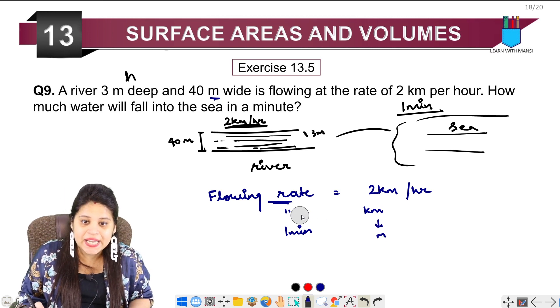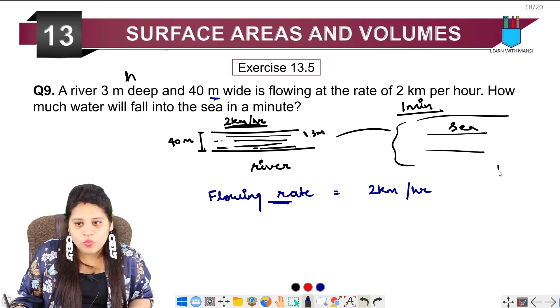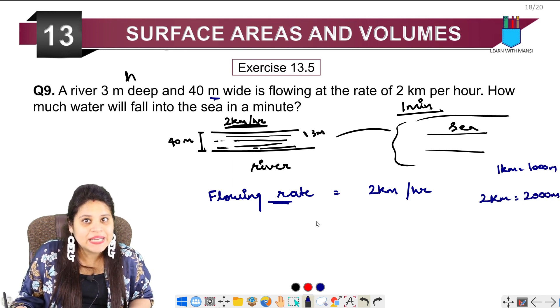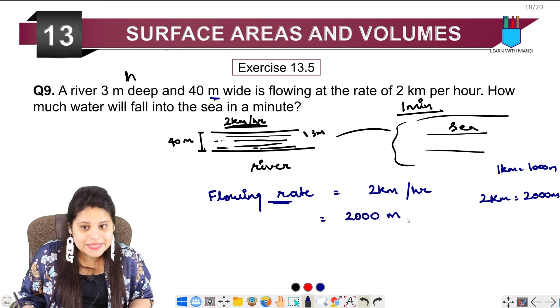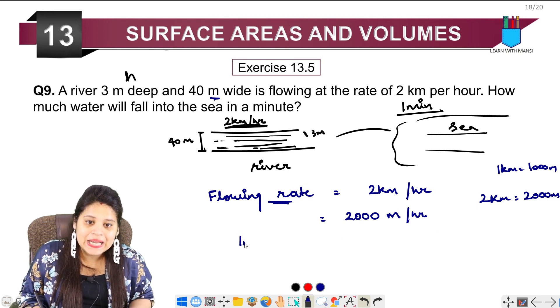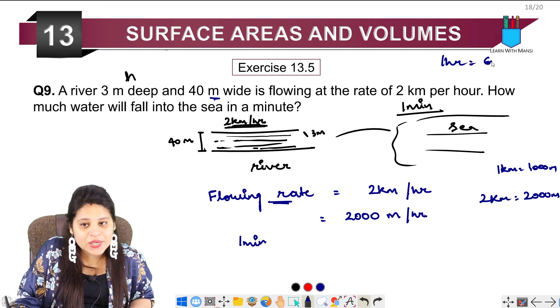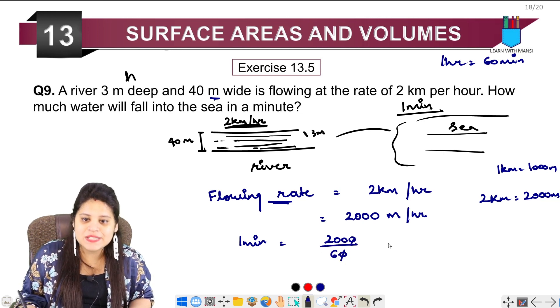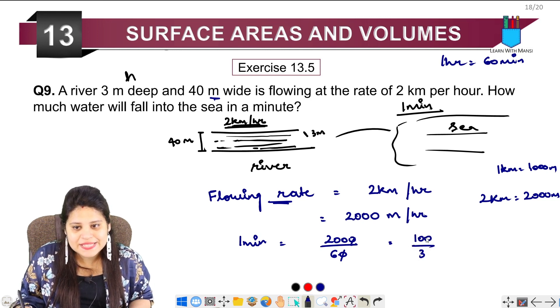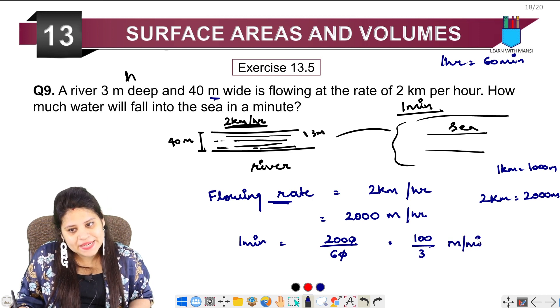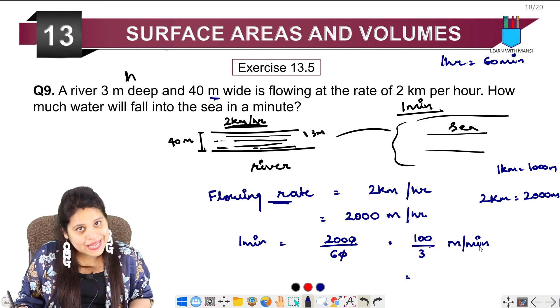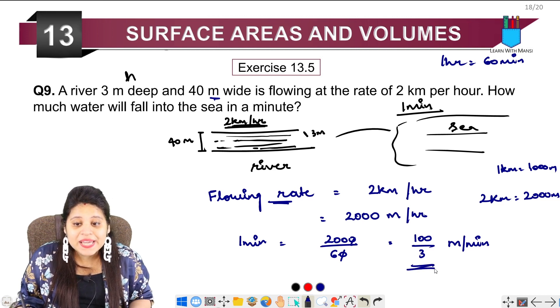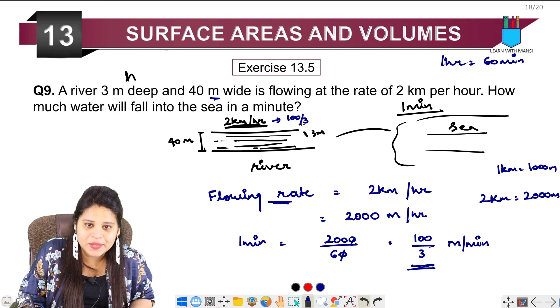So 2 kilometer will become 2000 meter, which means I can write this as 2000 meter per hour. Now this is the flowing rate for 1 hour. If I need to find for 1 minute, and 1 hour has 60 minutes, so 1 minute will be 2000 upon 60. Cancel the zeros, this becomes 100 upon 3. So 100 upon 3 meter per minute. So we got it for 1 minute in meters.